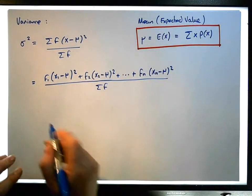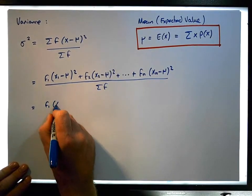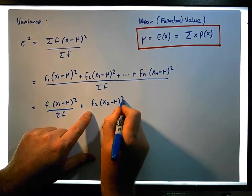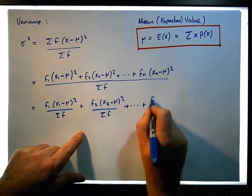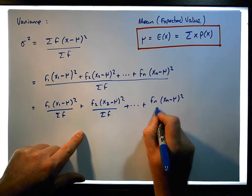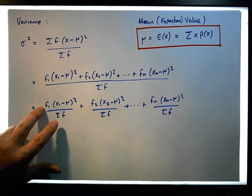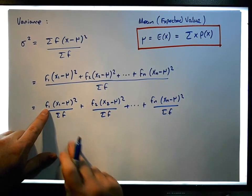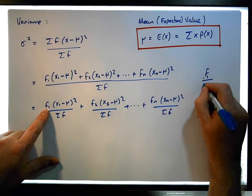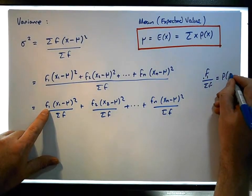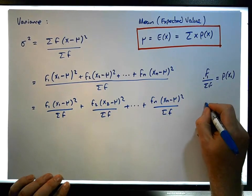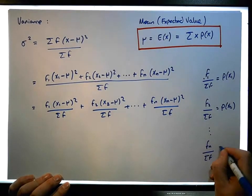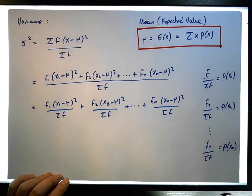Since the sum of the frequencies is a common denominator across each term, we can break this up into: f1 times (x1 minus mu) squared over the sum of frequencies, plus f2 times (x2 minus mu) squared over the sum of frequencies, all the way through to fn times (xn minus mu) squared over the sum of frequencies. The terms f1/Σf, f2/Σf, and fn/Σf are the probabilities of observing each discrete value.